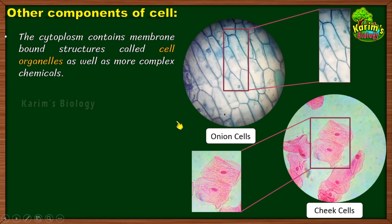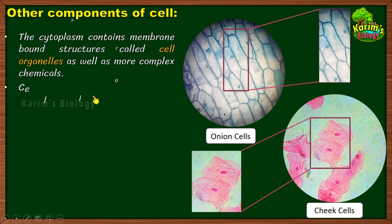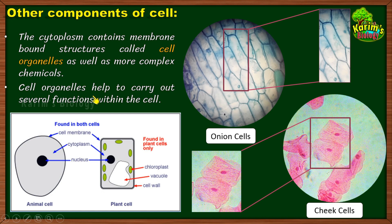Now let us find out what other structures are present in the cytoplasm. Within the cytoplasm we can find some membrane-bound structures called cell organelles, as well as more complex chemicals. The cytoplasm is a heterogeneous material — it has many chemicals dissolved in it. At the same time, the cytoplasm also consists of special little structures called cell organelles. Like we have organs in our body that do different work, within the cell there are tiny organs called organelles that perform different functions. Around each cell organelle there is a thin membrane called plasma membrane.